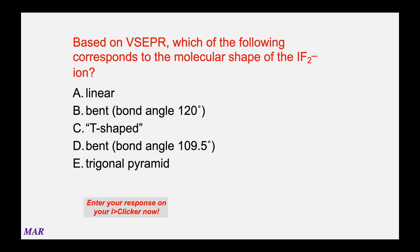Based on VSEPR, which of the following corresponds to the molecular shape of the IF₂⁻¹ ion? There are five possibilities. I recommend drawing the Lewis structure, determining the electron pair geometry and molecular geometry. Pause the video, work on it, and when you're ready, unpause it to hear the answer.